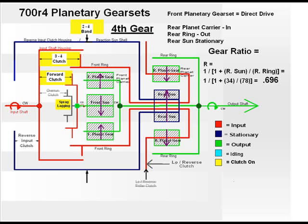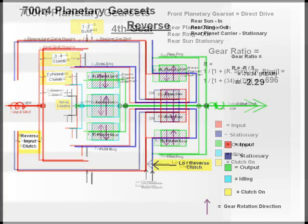With the rear sun stationary, the motion transfers to the output rear ring gear. This is the classic overdrive configuration which uses the formula shown here for the rear gear set, giving a ratio of 0.696 usually reported as 0.7 for this transmission.